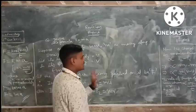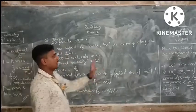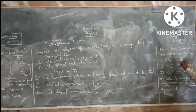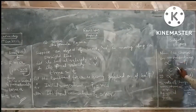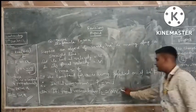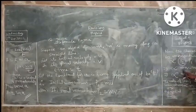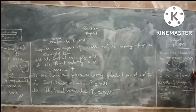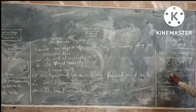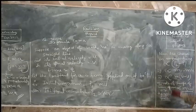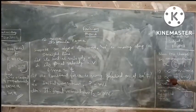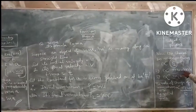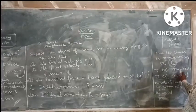Now, the change in momentum is directly proportional to p2 minus p1. Change in momentum is directly proportional to p2 minus p1. Now, the value of p2 is mv and the value of p1 is mu, so change in momentum is directly proportional to mv minus mu. Taking m as common — since m is present on both sides — change in momentum is directly proportional to m times (v minus u).